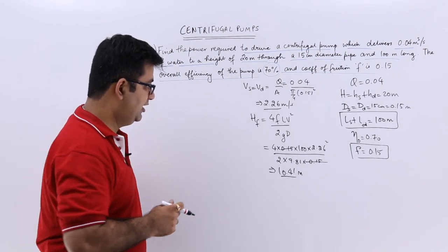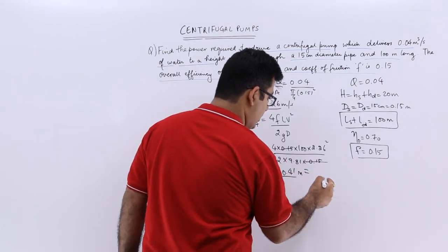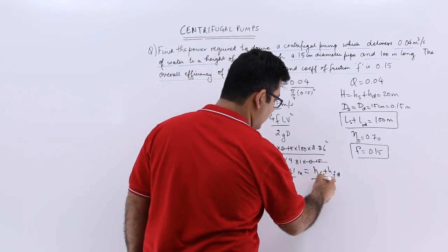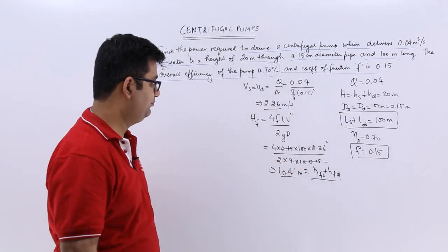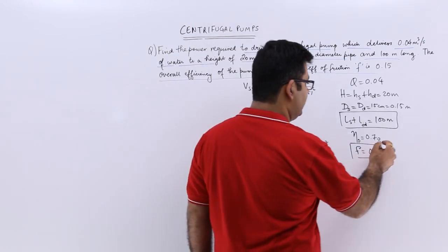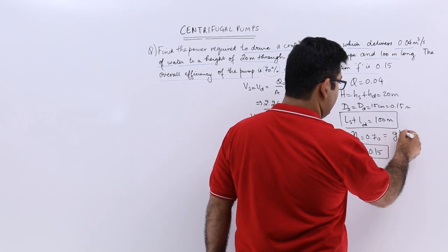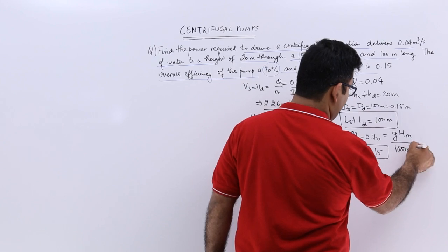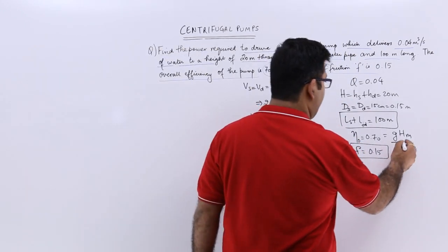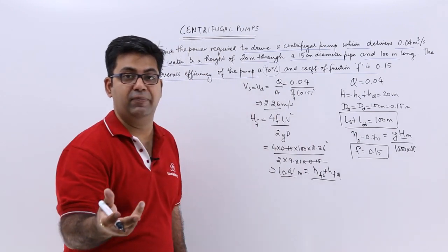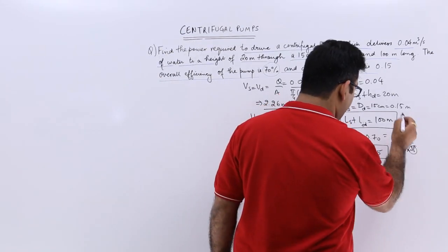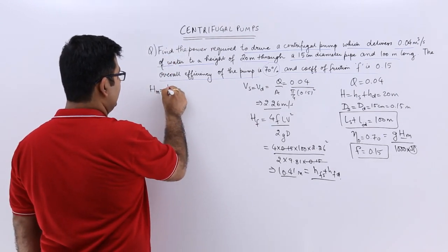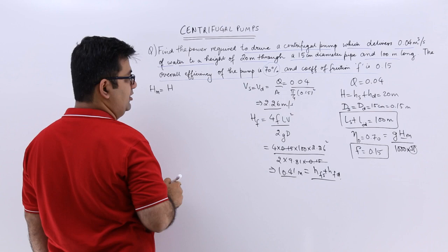This friction head loss is the sum of the friction head loss in the suction pipe and the friction head loss in the discharge pipe. Now, using the overall efficiency formula: eta_O = (ρg × Q × H_M) / (1000 × shaft power), where H_M is the manometric head, we need to calculate the manometric head in order to find the shaft power.